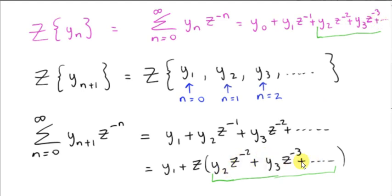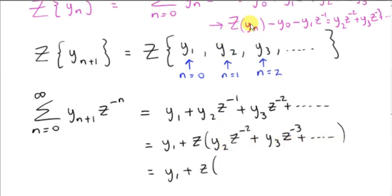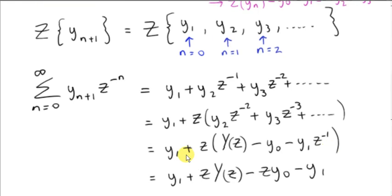The thing inside the bracket is the z transform of y sub n minus those two terms. Subtracting these two terms from both sides gives us what's inside the brackets. The z transform of y sub n can be written as big Y of z — a function of z. So we have Y of z, minus y sub 0, minus y sub 1 z to the minus 1. Multiplying z into the bracket, the y1 terms cancel out.